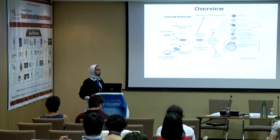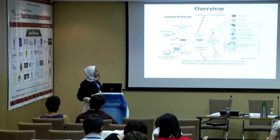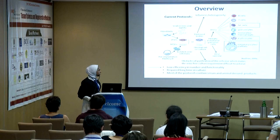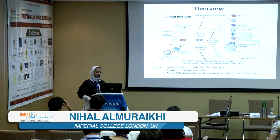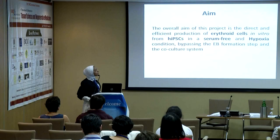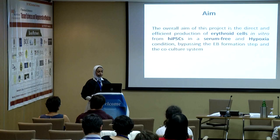However, embryoid body formation introduces heterogeneity within the produced cells, while researchers using stromal cell co-culture usually face obstacles in purifying those differentiated cells. Unfortunately, protocols in the literature also show low efficiency in number and functionality, require long time in culture, and most contain serum and animal-derived products. That was the rationale of my project, which aimed at direct and efficient production of erythroid cells in vitro from human iPS cells in a serum-free and hypoxic condition, bypassing completely the EB formation step and the co-culture system.